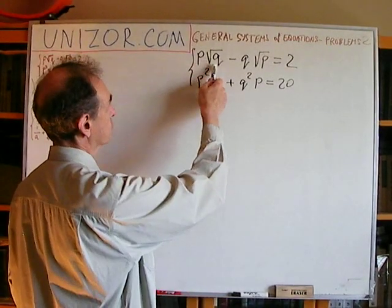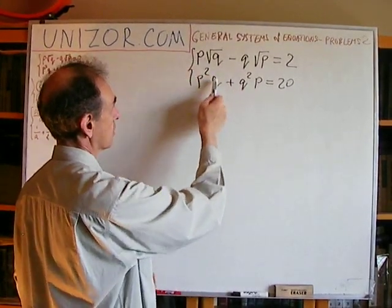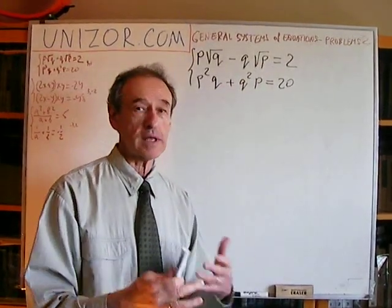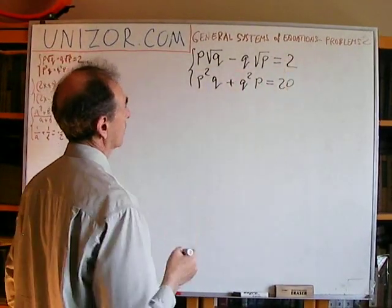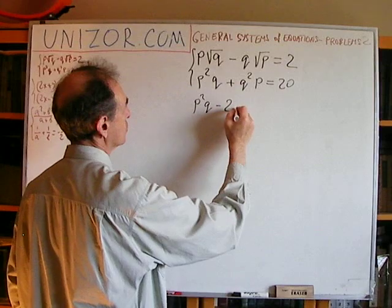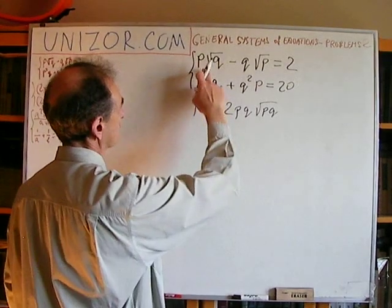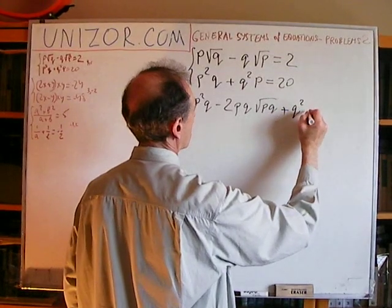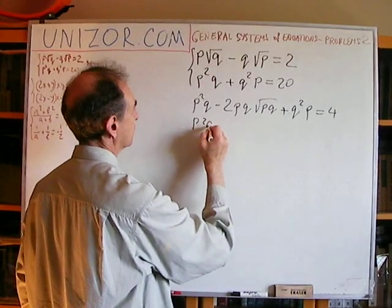Because squaring the first equation gives us exactly the terms in the second equation — P-squared Q and Q-squared P. So if I raise to the power of two, it would be P-squared Q minus 2PQ times the square root of PQ, plus Q-squared P, and this equals 4. Now the second equation I will leave as is.